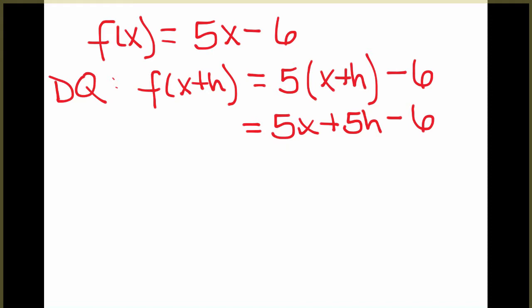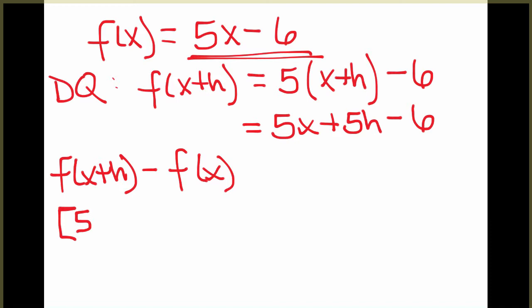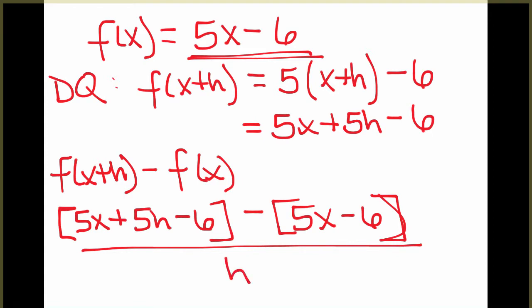Then the second thing in our difference quotient formula was f of x, which here is already given to us. So when the difference quotient asks to do f of x plus h minus f of x, in this instance that would give us, I'll put f of x plus h in brackets, minus 5x minus 6.